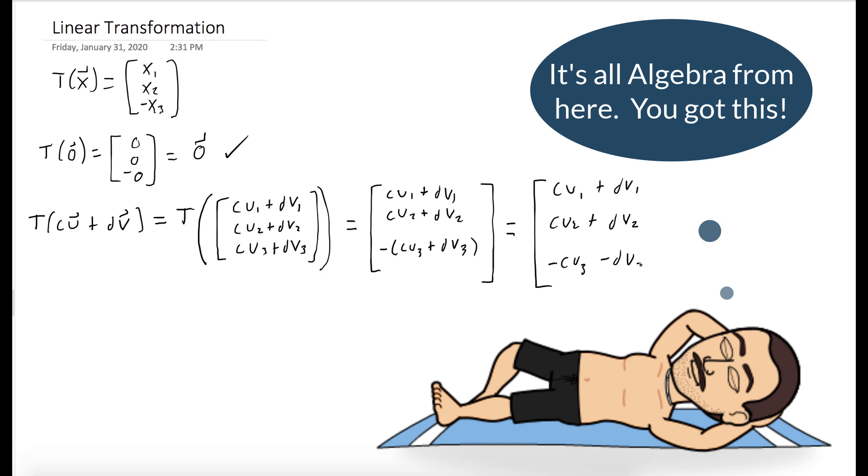So we could now distribute that negative one into the third entry. And what we'll do is we'll take our vector and break it up. The terms with U's will be first, and the terms that have V's will be second. And you can see in that first vector, every term has a C in it, so we can factor that out.